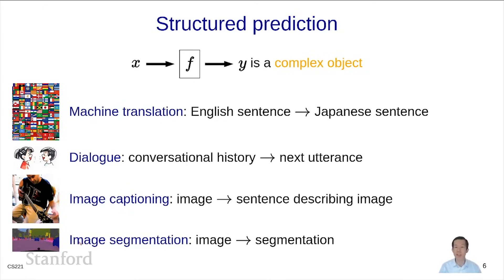Image segmentation, which is useful for autonomous driving, takes an image of a scene as x and produces y, which is a segmentation of that scene into regions corresponding to objects in the real world.